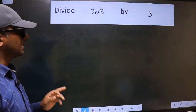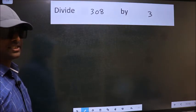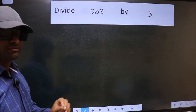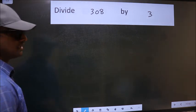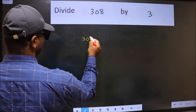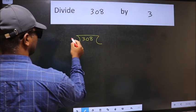Divide 308 by 3. To do this division, we should frame it in this way. 308 and 3 here.